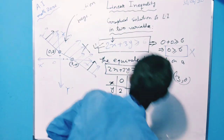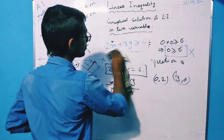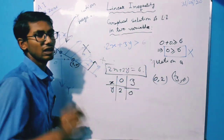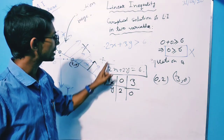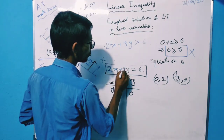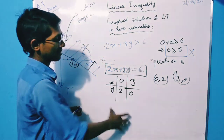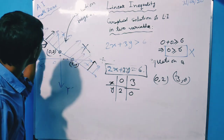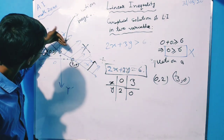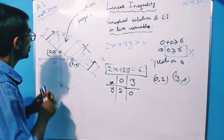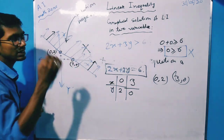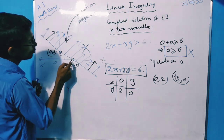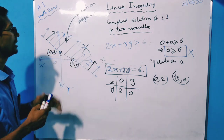Now, if the linear inequality had only a strictly greater than sign — that is, 2x plus 3y greater than 6 — then you have to do the same thing. The equivalent linear equation is 2x plus 3y equals 6 and you solve it the same way. However, since there is no equality sign, this line will not be included in the solution region. So you have to draw it as a dotted line. A dotted line represents that the line itself is not included in the solution region.